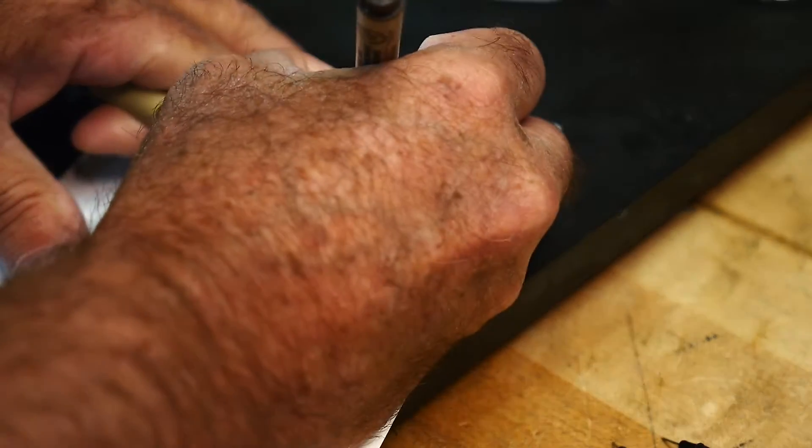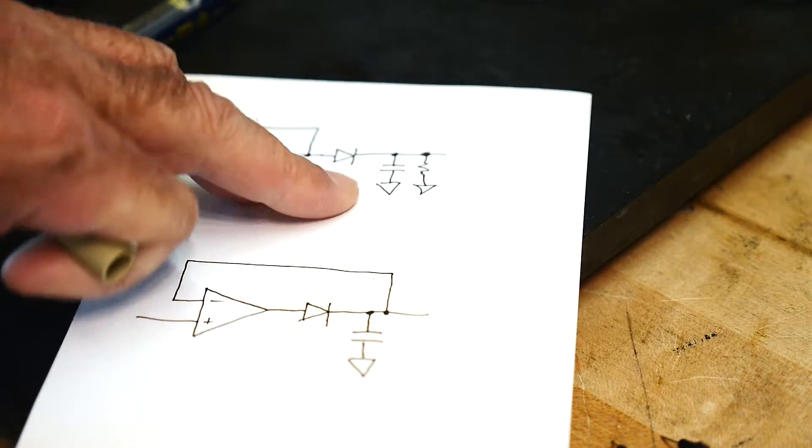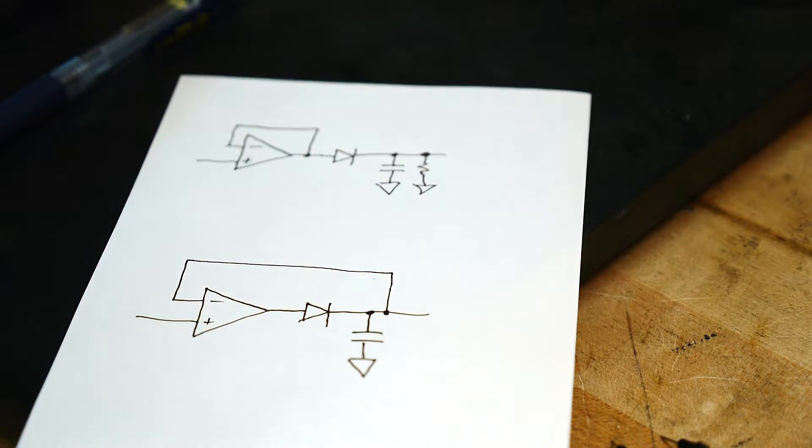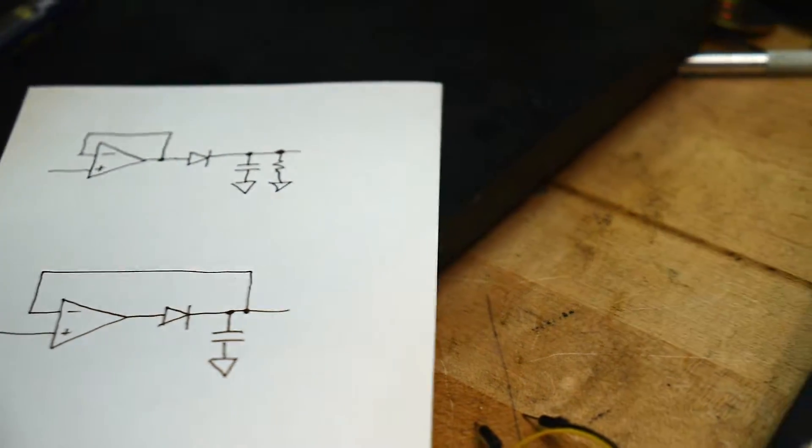We're going to put a resistor on the output. So that resistor will bleed this capacitor. It will start discharging this capacitor. So let's go ahead and put that resistor in the circuit.